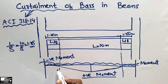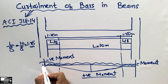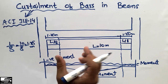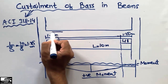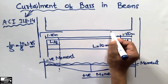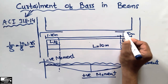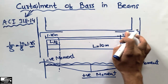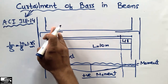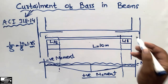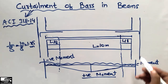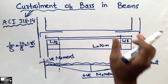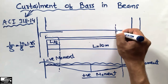Now coming to the negative reinforcement — as you can see, the negative moment occurs at the supports, so for negative reinforcement we provide top bars. These top bars are provided at the top of the beam at the support regions to resist the negative moments. These top bars are also curtailed at a certain portion.